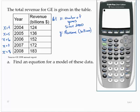So let's go to the calculator and create a scatter plot of these data. Stat edit. So my list 1 will have 4, 5, 6, 7, and 8. And L2 will have 124, 136, 152, 172, and 183.